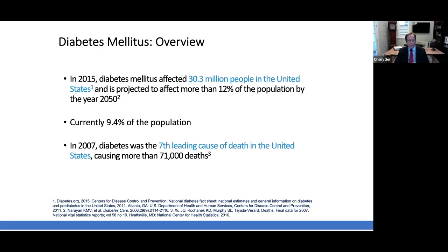First, an overview of diabetes. In the United States, in 2015, as per the Centers for Disease Control and Prevention, there were approximately 30.3 million people with diabetes. It is projected by 2050 that 12% of the population will be affected, currently about 9.4%. In 2007, diabetes was the seventh leading cause of death in the United States, causing more than 71,000 people to succumb to this illness.